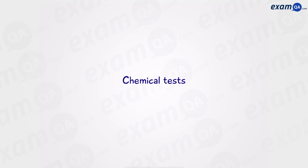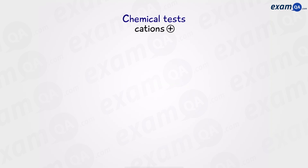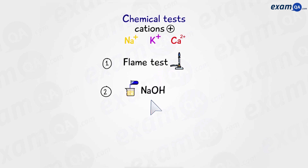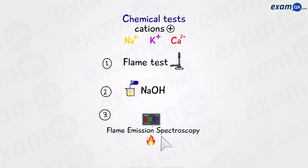Chemical tests. In this video we're going to be looking at how to identify cations. These are positive ions such as sodium, potassium and calcium. There are three different methods. The first one is by doing the flame test. In the second method we're going to use sodium hydroxide to do a precipitation test. And finally we're going to look at flame emission spectroscopy.